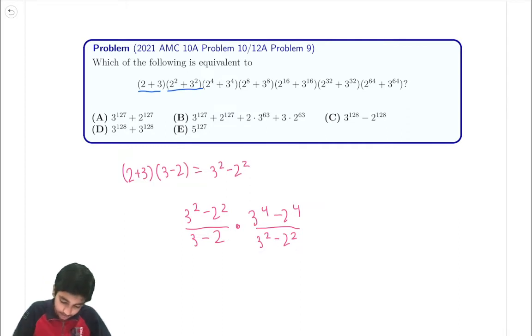So we can express this, and we can then telescope this, and we can see that the last term is just going to be equal to 3 to the 128 minus 2 to the 128 over 3 to the 64 minus 2 to the 64, right?